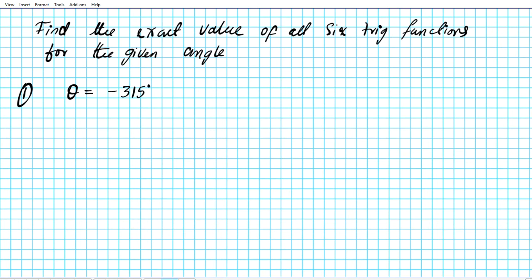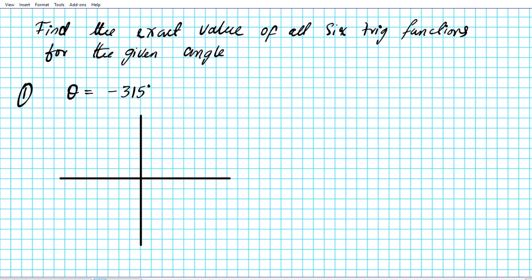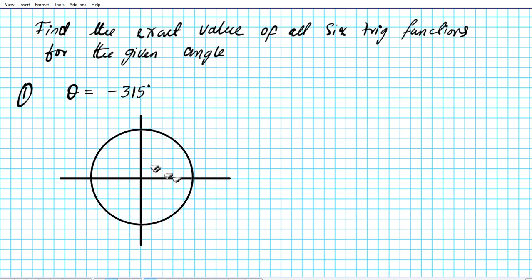To help us determine this, we're going to sketch the unit circle — not the entire thing, but just the part relevant to this particular problem. We'll have our x and y axes drawn, and then draw ourselves a nice circle. Then let's identify where -315° is located and consequently find the reference angle.